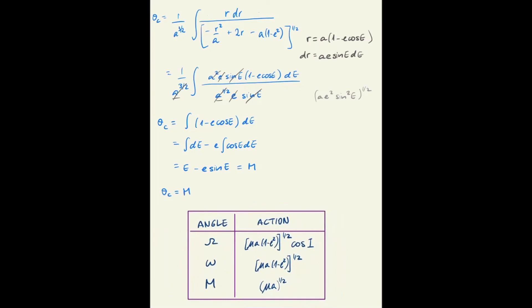So here they are, the Delaunay variables: the angle theta and the action j variables that obey the Hamilton's equations of motion.